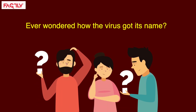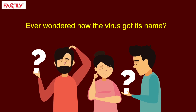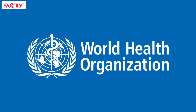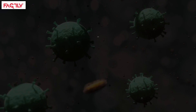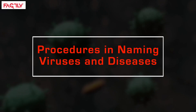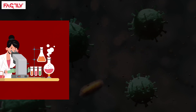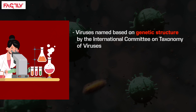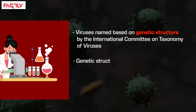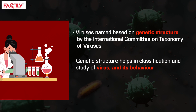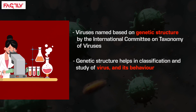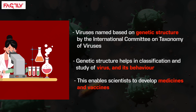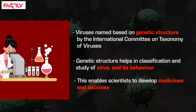Have you ever wondered how the virus got its name? To understand that, let's look at the convention for naming viruses and diseases followed by the World Health Organization. Viruses are named based on their genetic structure by the International Committee on Taxonomy of Viruses. Genetic structure helps in the classification and study of the virus and its behaviour.